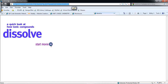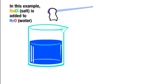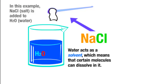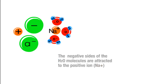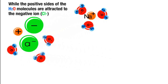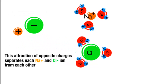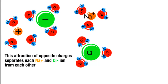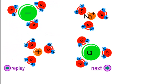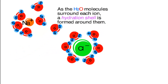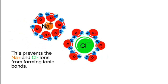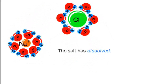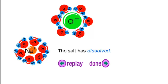Let's watch a video to show that process — how do ionic compounds dissolve? Here we've got salt being added to water. Because water is a solvent, it can dissolve that salt. The oxygens are negative, so they surround the positive sodium and pull it away. The hydrogens are positive, and they surround the negative chlorine and pull it away. This keeps happening until all of the salt is dissolved. Those bubbles forming around the chlorine and sodium are called hydration shells, which prevent the sodium and chlorine from ever getting back together — so the salt is truly dissolved.